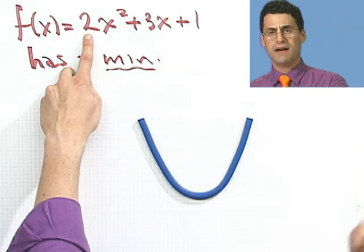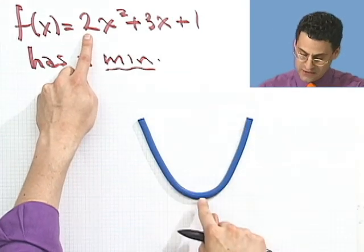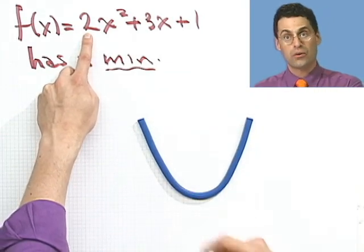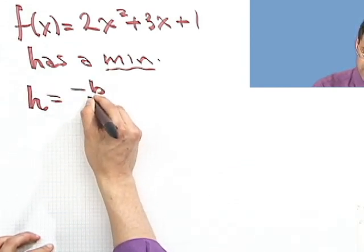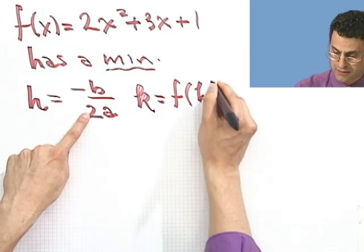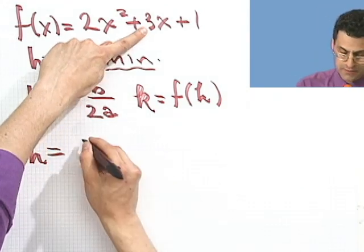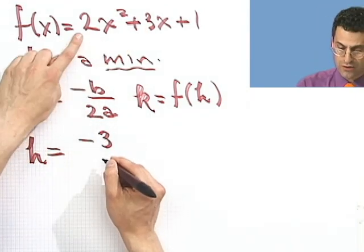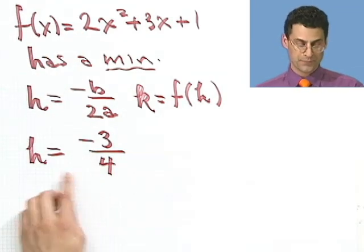You may say it's positive, therefore it's a max — no, no, no. Since it's positive, it goes down and then up; it's a happy face. So we have a minimum there. Now, where's the minimum and what's the value of it? That's going to be exactly at the vertex. So to find the vertex, we know h is going to be negative b over 2a. And k is just going to be f evaluated at that point. So h is going to be negative b, which is negative 3, all over 2a, which is 4. So we get minus 3 fourths.